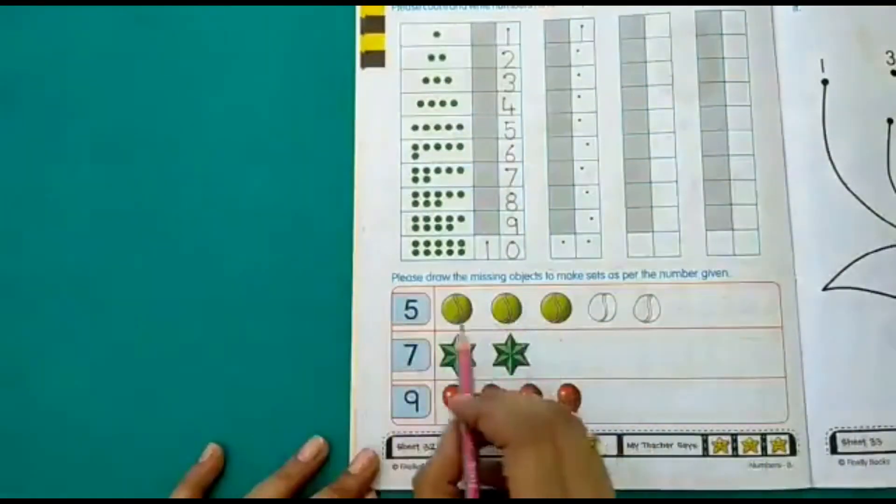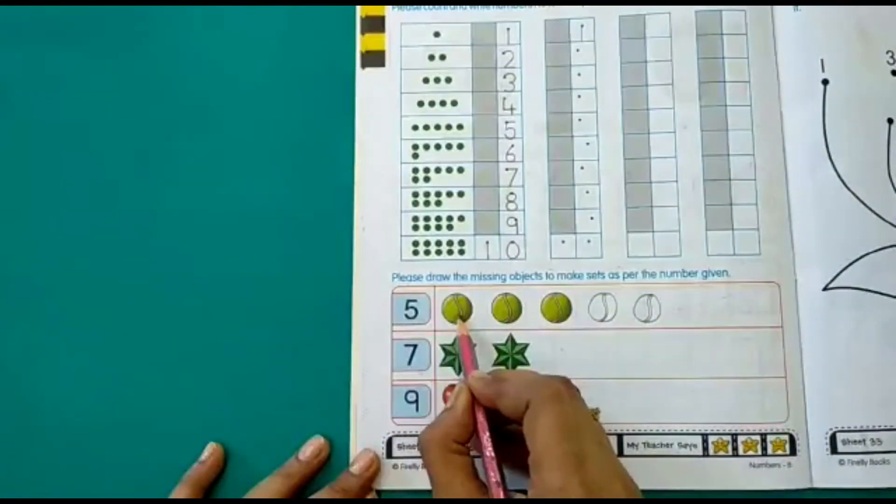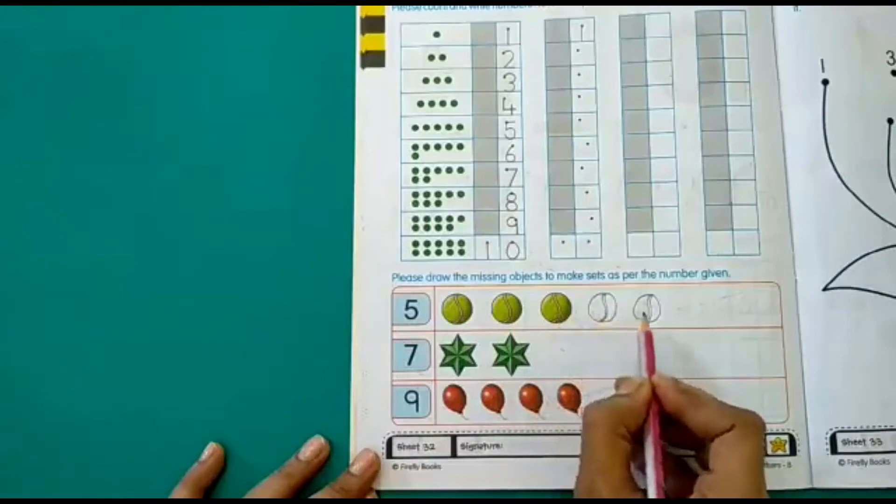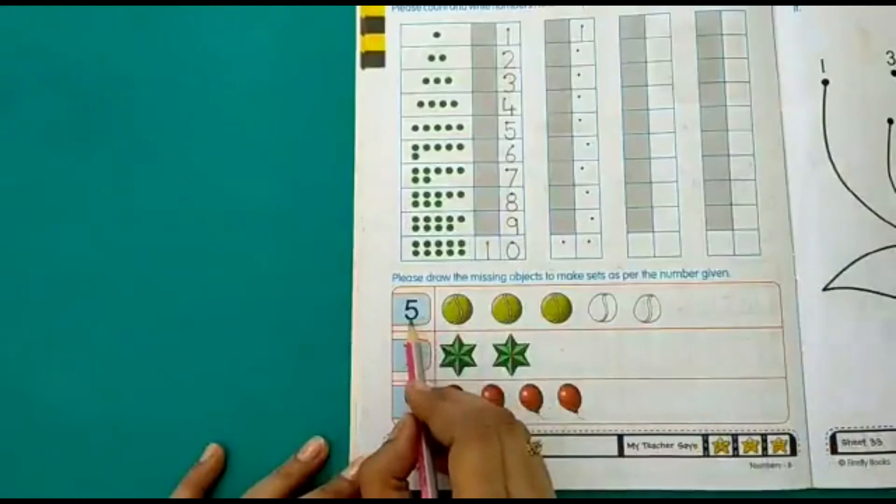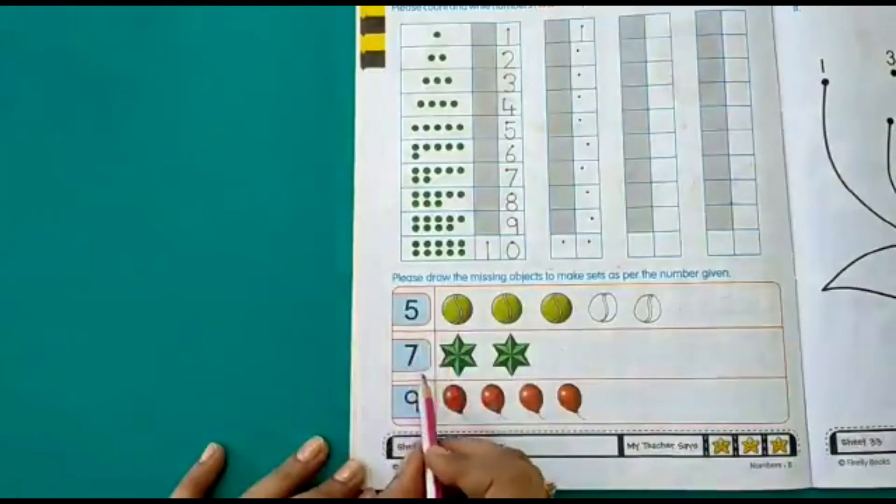So now let's count how many balls we have. 1, 2, 3, 4, 5. Right. We have 5 balls. And the number written here is 5. So in the same way,